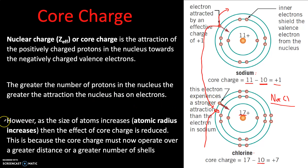Let's take another step forward and talk about atomic radius. As the size of atoms increases and atomic radius increases, the effect of core charge is reduced. This is because the core charge must now operate over a greater distance or a greater number of shells. As the atom grows and the distance between the nucleus and the outermost shell grows, that attractive force between the nucleus and the valence electrons becomes weaker. The smaller the atom, the less distance that nuclear attractive force has to work, allowing the nucleus to hold on to valence electrons more strongly.